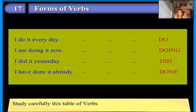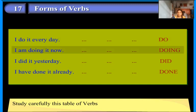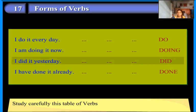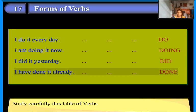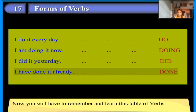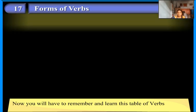Study carefully this table of verbs. I do it every day — do. I am doing it now — doing. I did it yesterday — did. I have done it already — done.